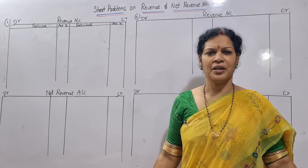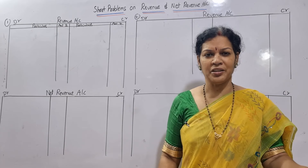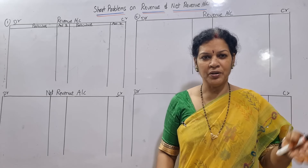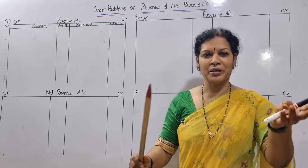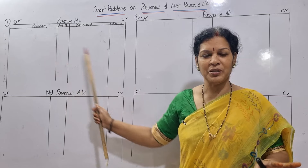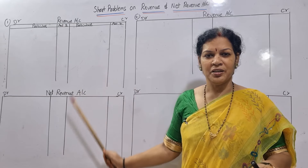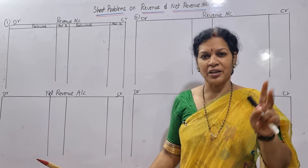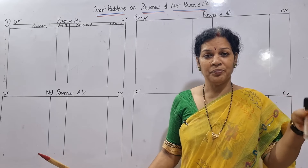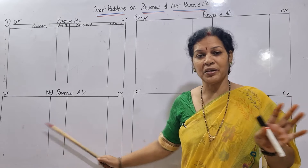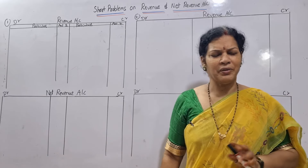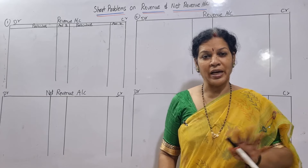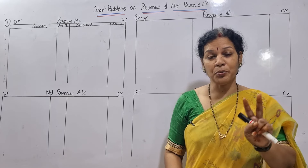In the net revenue account, only dividend, interest, and long-term interest transactions come. Rest of all the expenses will be on the revenue account debit side, incomes on the credit side. If you want, you can check your textbook - a lengthy format is given, do not get confused. All the expenses debit, all the incomes credit. Net revenue account has only a few transactions. That is why I'm not giving any format - directly we'll enter into the problems.